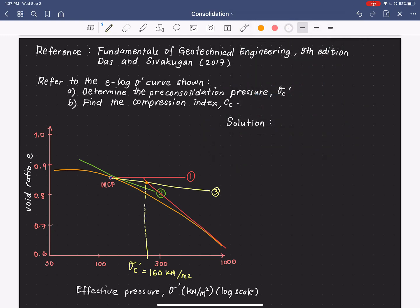So, for letter A, let me write from the graphical solution, σ'c is equal to 160 kilonewton per square meter.